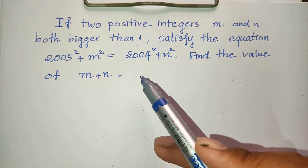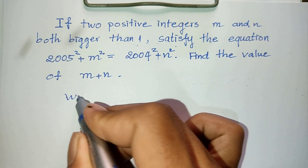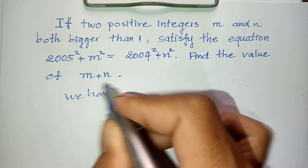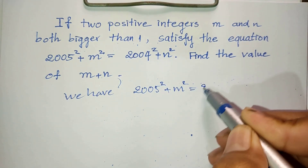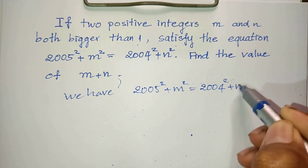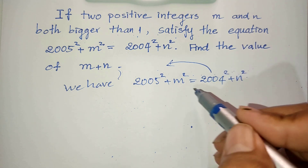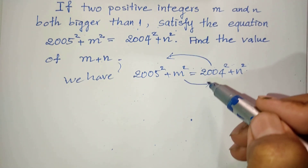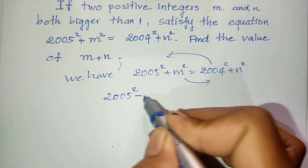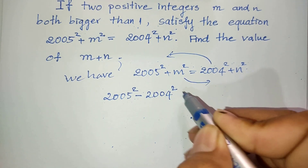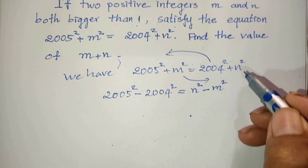Okay, this is the equation we have: 2·cos²(5°) + m² = 2·cos²(4°) + n². I take 2·cos²(4°) to the left-hand side and n² to the right-hand side, so we get 2·cos²(5°) minus 2·cos²(4°) equals n² minus m².